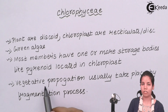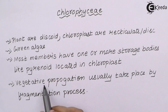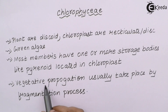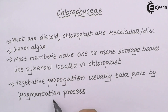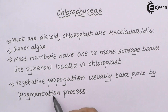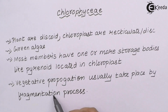Reproduction in this is both sexual and asexual. When I talk about asexual reproduction, vegetative reproduction is observed, and this takes place by the process of fragmentation — similar to algae in general — where the parent body divides on maturity into daughter cells.